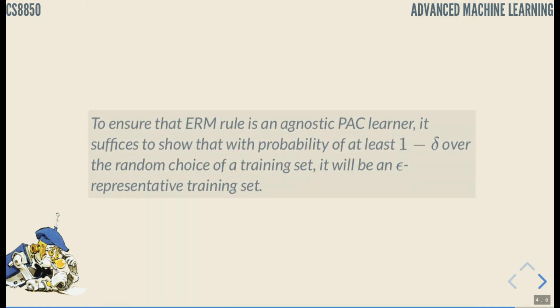So to ensure that empirical risk minimization rule is an agnostic PAC-learner, it suffices to show that with probability of at least 1 minus delta over the random choice of a training set, it will be an epsilon representative training set. So that's another tool.